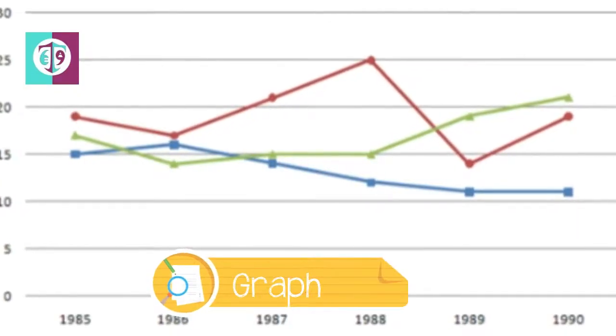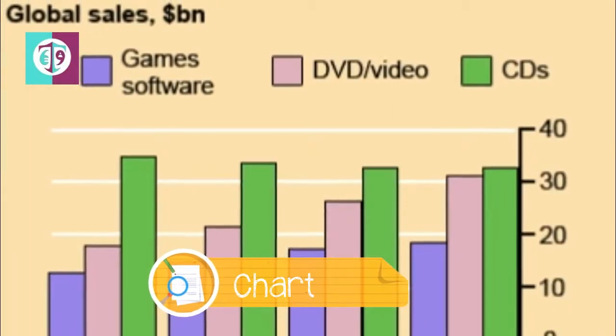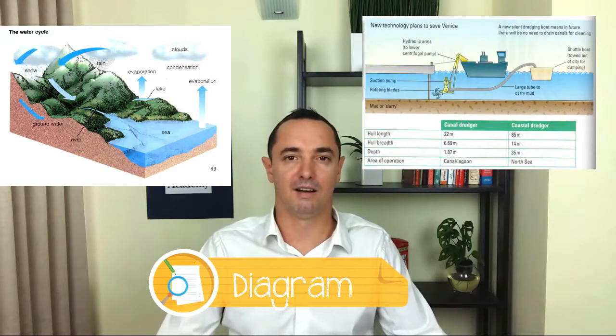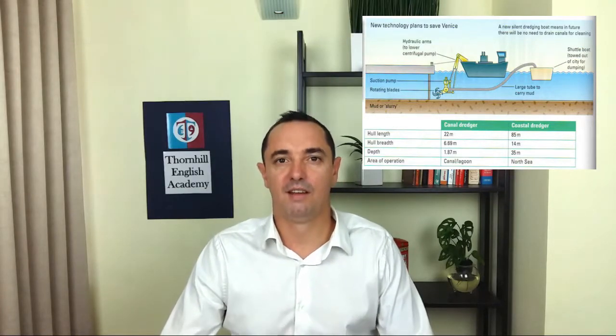You will be marked in task 1 on your ability to present, organize, and compare data or information in the form of a graph, a chart, a table, a diagram, with a diagram meaning a few different things. A diagram could be a place, a process, a machine, how something works, things like this. Each one has its own difficulty. You may even get a combination of two different types of data source, which you'll need to talk about.